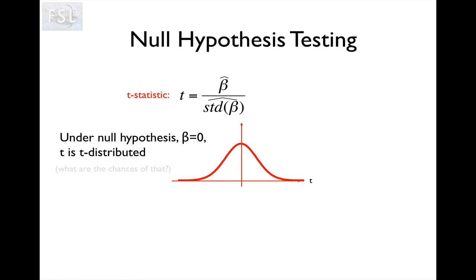The t-statistic, as we talked about in the first part of the talk, looks like this: t is the parameter estimate divided by the uncertainty of the parameter estimate. Let's say for the sake of argument that this particular parameter is the parameter pertaining to word generation. As I said in the first part, if we see a large value of beta, we think that that particular voxel is probably interested in word generation. A large value of beta also indicates a large value of the t-statistic. But what constitutes a large value?